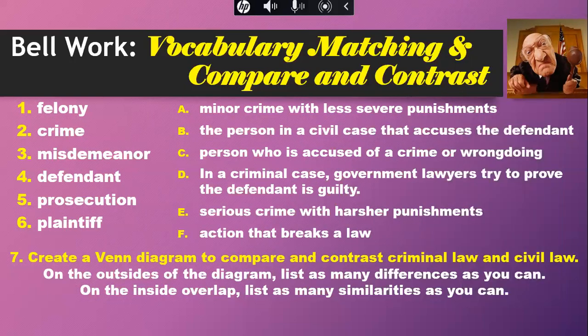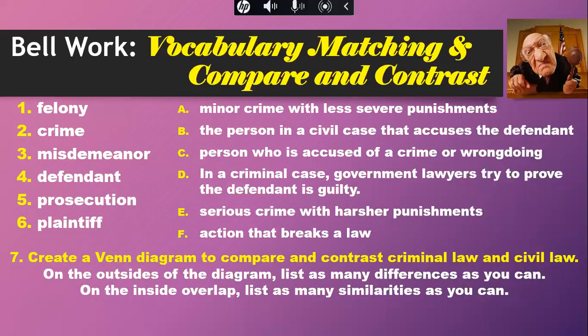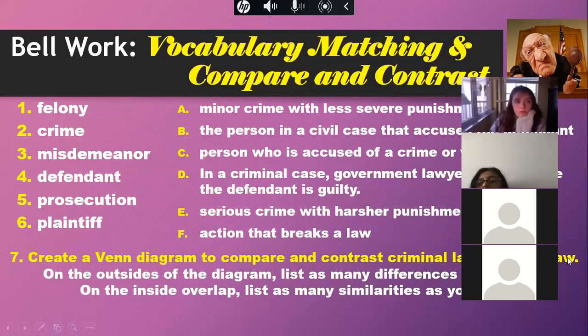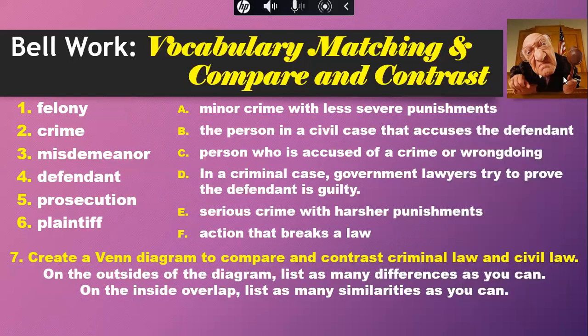Continuing the vocabulary matching. Number five - prosecution: in a criminal case, government lawyers try to prove the defendant is guilty. Number six - plaintiff: the person in a civil case who accuses the defendant.